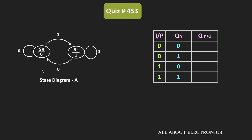As you can see in the state diagram, when the output of the flip-flop is zero and the input is also zero, then it will remain in the same state — meaning in the next state, the output will be zero. Likewise, in the same state, when the input is equal to one, then it will do a transition from S0 to S1, and the output of the flip-flop will become one.